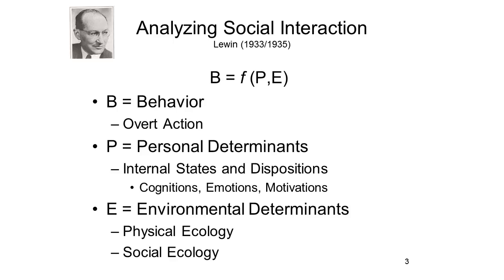This formula has sometimes been called Lewin's grand truism, because if you think about it for a second, there's not much left by the time you've taken into account personal and environmental determinants of behavior. Nonetheless, this formula provided the framework for personality and social psychology as it began to develop in the 1930s. And it turns out to be not such a truism — it turns out to be rather a profound idea.